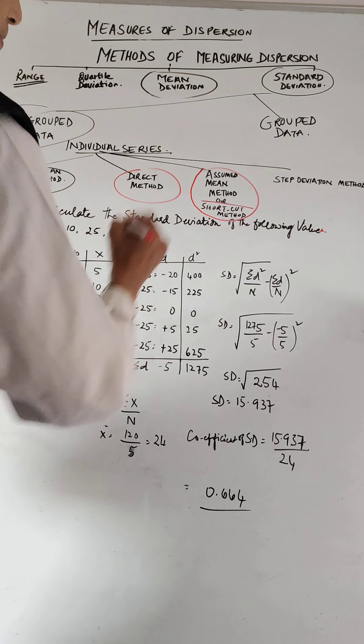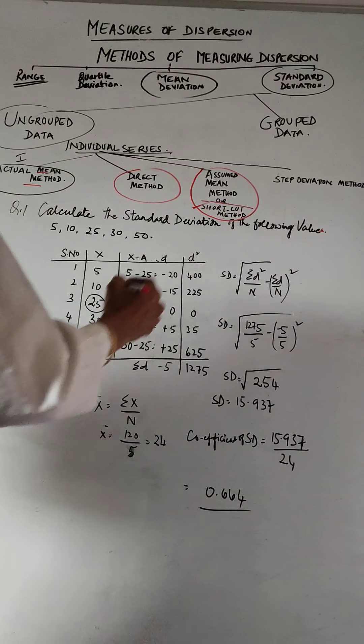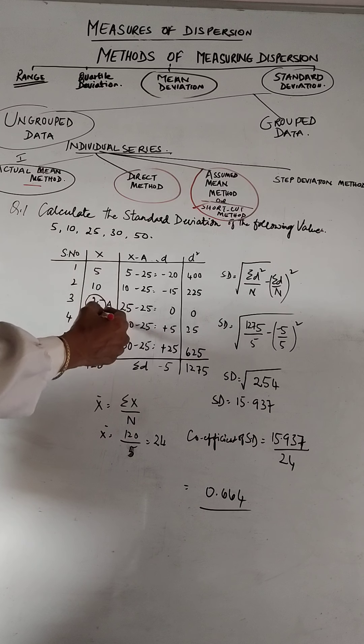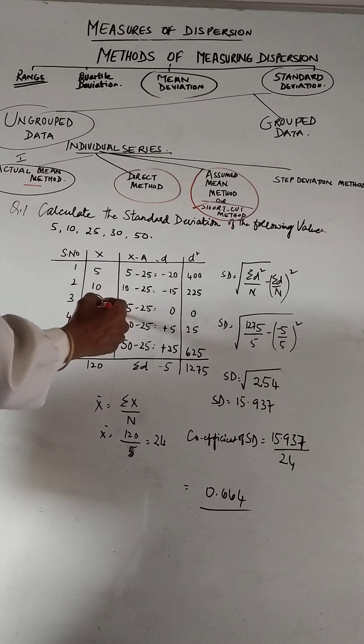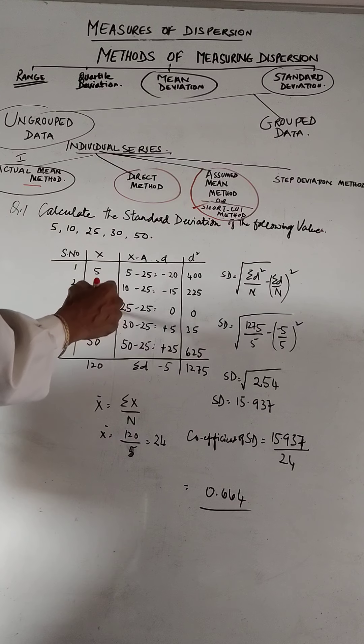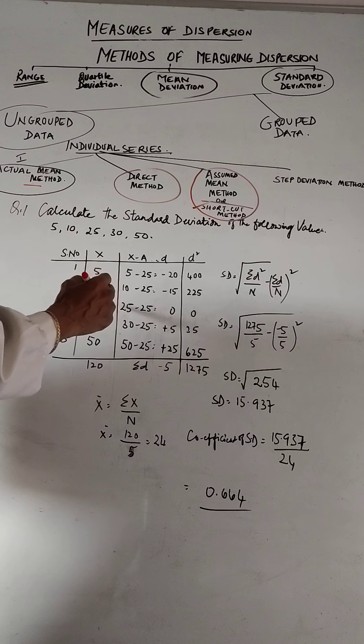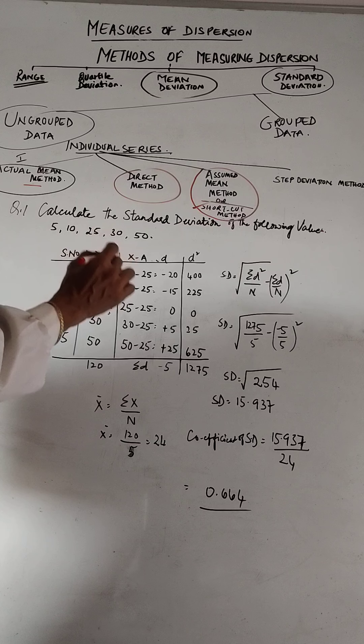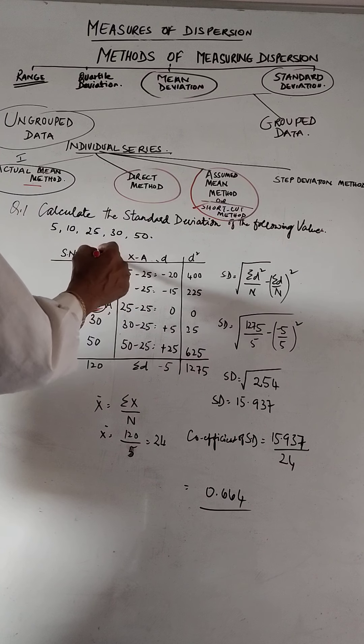We're doing the shortcut method. I've taken the same values as 5, 10, 25, 30, 50, and I've taken 25 as an assumed value, arbitrarily selected that value as the assumed mean.